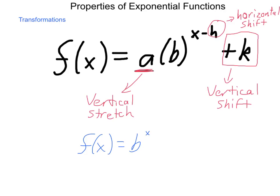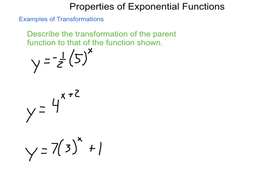So let's take a look at some examples of transformations. We need to describe the transformation of the parent function to that of the function shown. So if we have y equals negative 1 half times 5 to the x, our parent function here is